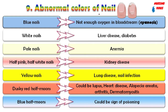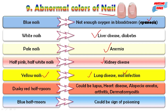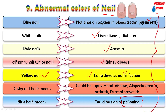The next topic is the abnormal shape or color of nails. Blue nails indicate cyanosis — when the person is not getting adequate oxygen supply. White nails are seen in liver disease and diabetes. Pale nails are seen in anemia. Half pink, half white nails are seen in kidney disease. Yellow nails are seen in lung disease and nail infections. Dusky red half-moon shape is seen in tumors, heart disease, alopecia areata, or arthritis. Blue half-moons can be a specific sign of poisoning.